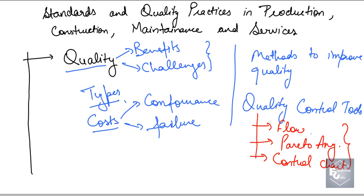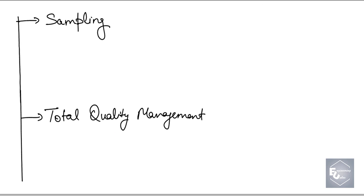You will learn about all these things in the upcoming lectures. After that comes Sampling. As an engineer, while you are checking the quality of a product, you will be dealing with a large lot of products as the output of the process. You cannot check each and every product individually, so you will take a small sample from the lot. For example, if you have produced 1000 units, you will take two or three units, test them, and decide whether the whole lot is up to quality or not.